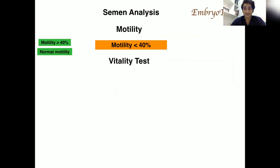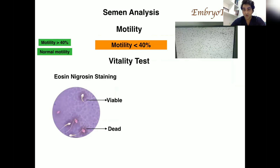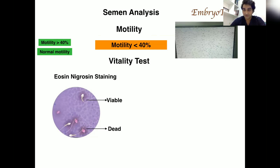After confirming motility is less than 40%, we move towards the vitality test. One of the most common ways is eosin-nigrosin staining. We use eosin to dye the dead sperm and nigrosin to give a dark background. Because there is a leakage in the plasma membrane of dead sperm, the eosin moves into them and turns them pink. Those who are viable resist the inflow of the dye. This is a very common way of knowing the vitality of the semen.